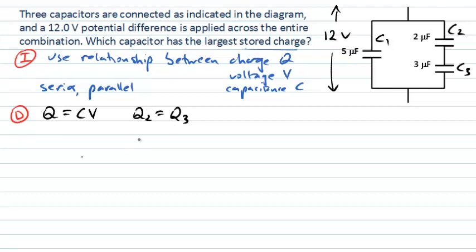So what we really want to determine now is Q2 or Q3, the same value - is that bigger than Q1, the charge on capacitor 1, or is it less than Q1? In fact, we may have two capacitors here that both have the larger charge on them, or it may be that capacitor 1 has the largest charge.